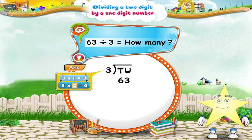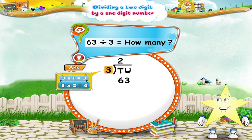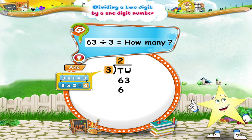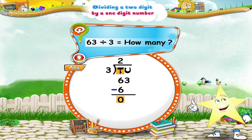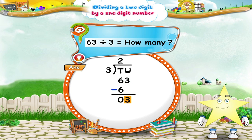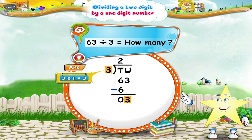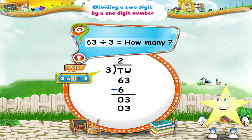Write the 2 above the line in the tens place of the quotient. The product of 3 and 2 is 6. Subtract this product from 6 tens. 0 tens remains. Next, bring down the 3 units and write it at the side of 0. Divide 3 units by 3. Say the 3 times table up to 3. 3 1's are 3. The quotient is 1.